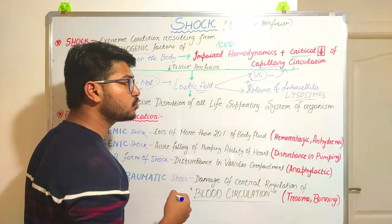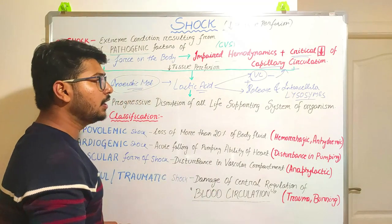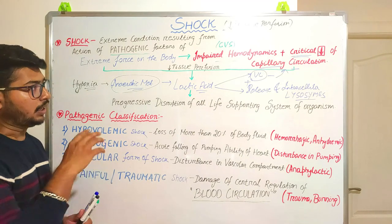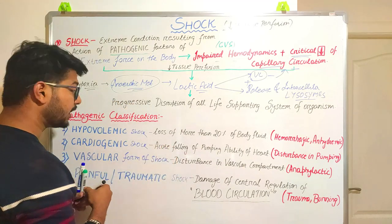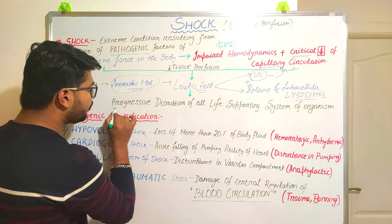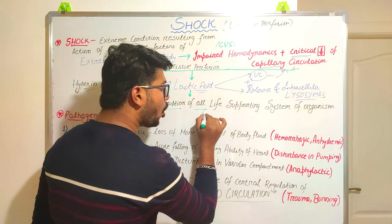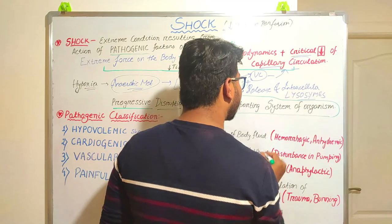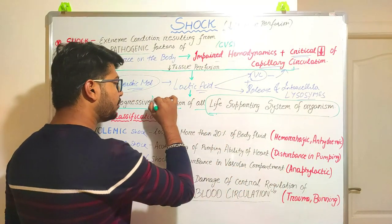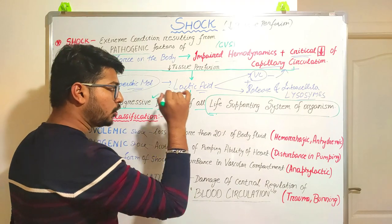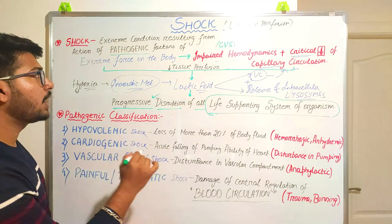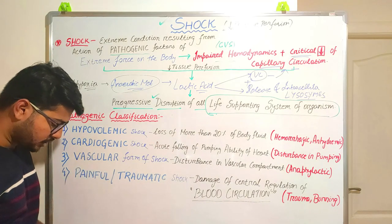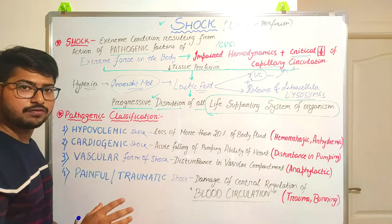If the intracellular lysosomes are released inside the cell, it will obviously cause intracellular damage — the cell will be damaged and the tissue will get damaged. So in conclusion, there will be progressive disruption of all life-supporting systems of the organism. If all life-supporting systems are disrupted, the human cannot survive, which is why shock is known as an extreme or critical condition in which the body tends to lose all its vital functions.